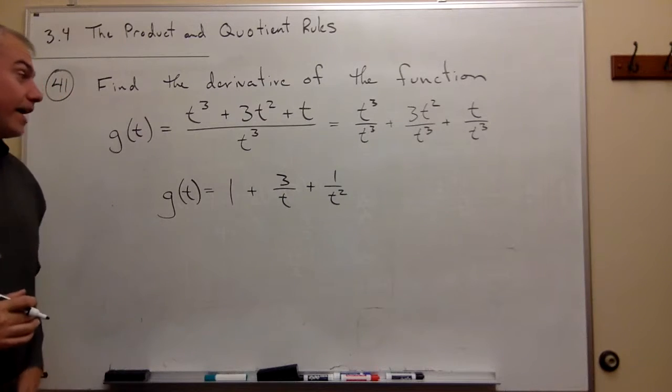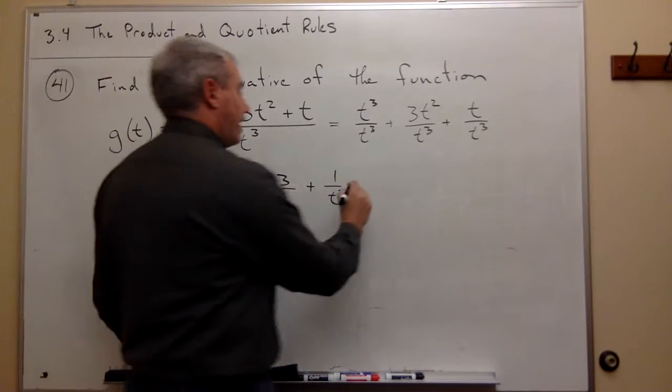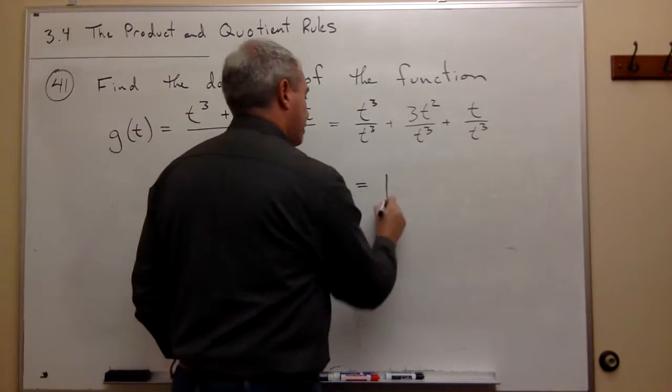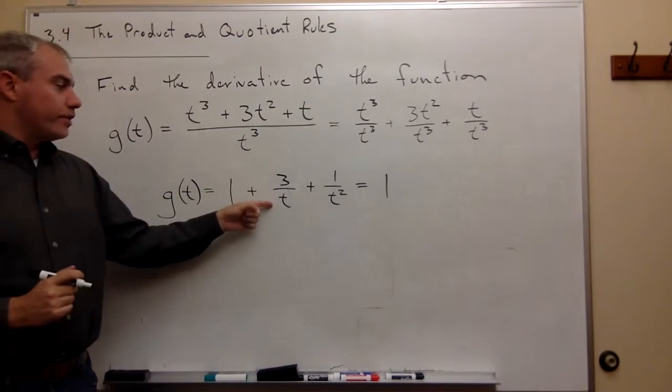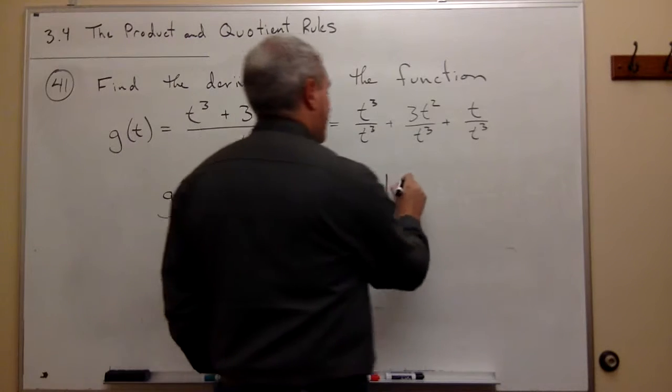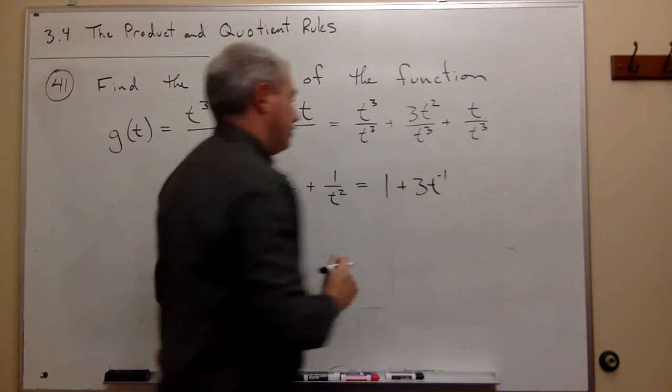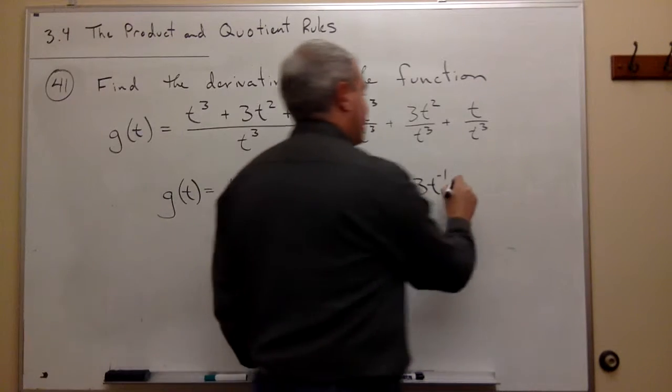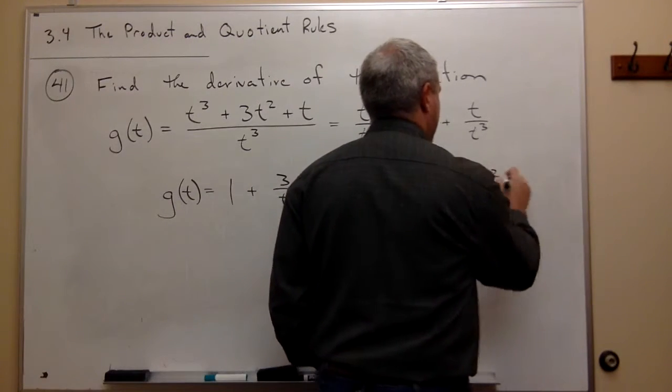Now, I could write that in a different way again, and that is, well, 1 is still 1. 3 over t could be written as 3t to the negative 1, and 1 over t squared could be written as t to the minus 2.